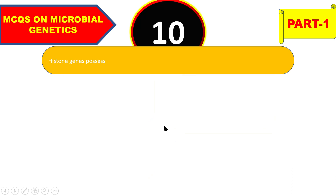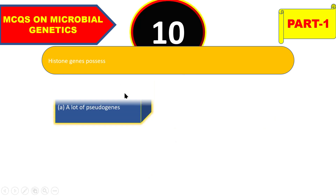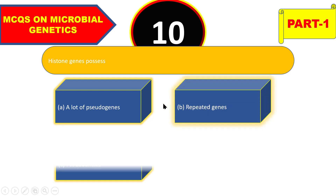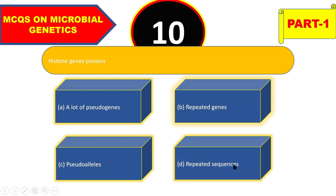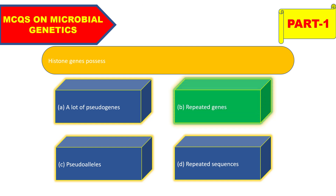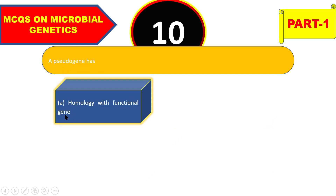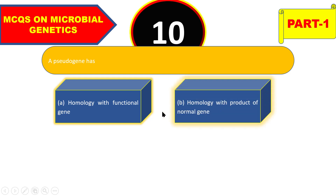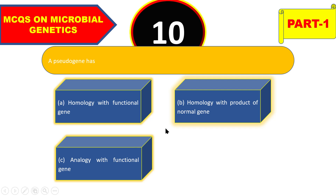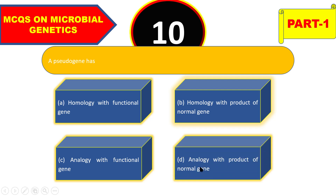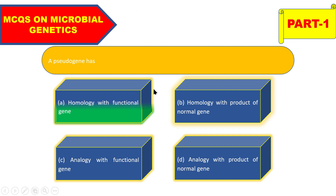Next question: histogenes possess a lot of — pseudogenes, repeated genes, pseudo-alleles, or repeated sequences? The right answer is repeated genes. Also, a pseudogene has homology with functional gene, homology with product of normal gene, analogy with functional gene, or analogy with product of normal gene? The right answer is homology with functional gene.